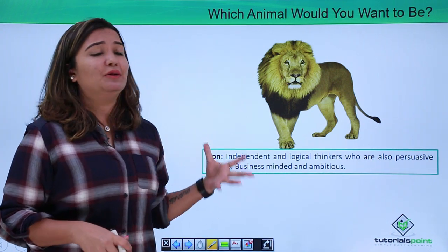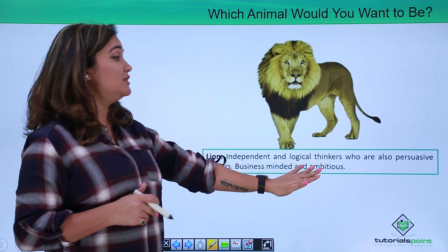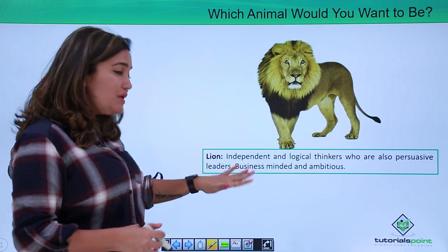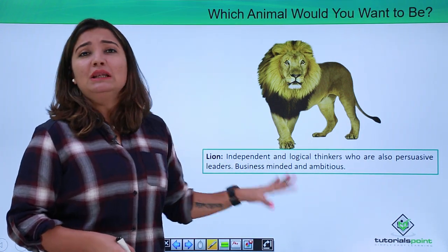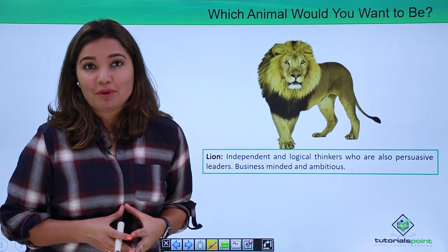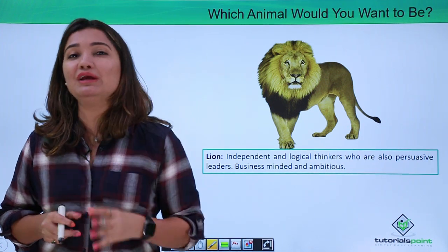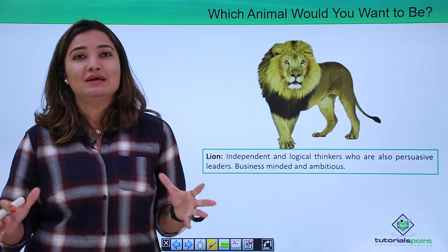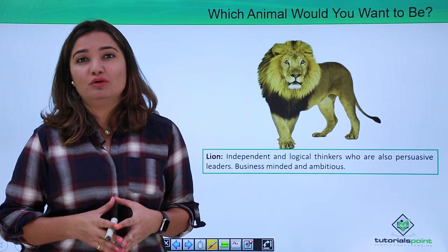Lion. What does lion indicate? Independent and logical thinkers who are also persuasive leaders. Business minded and ambitious are such people. If your first choice is lion, get this thing very clear in your mind that you definitely would chisel out to be a very good leader and you are a very ambitious and business minded person. That is the kind of job role which is fit for you.